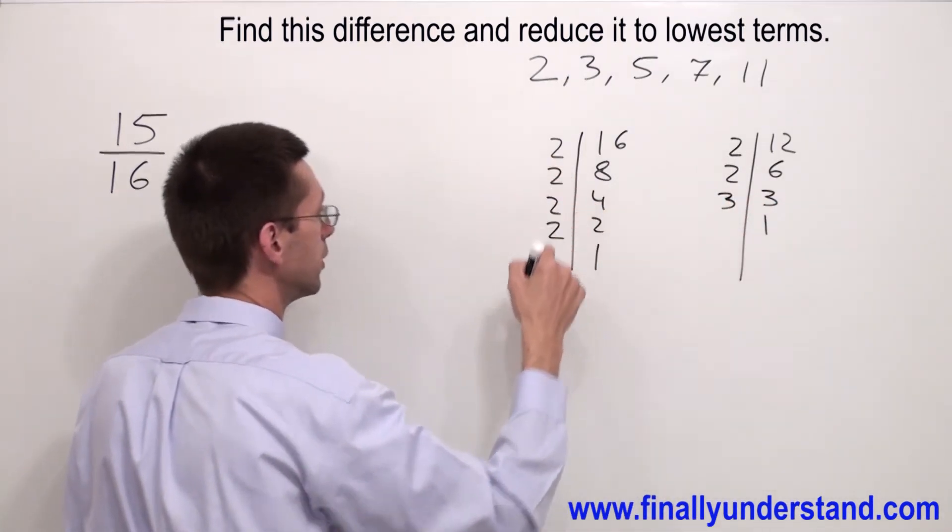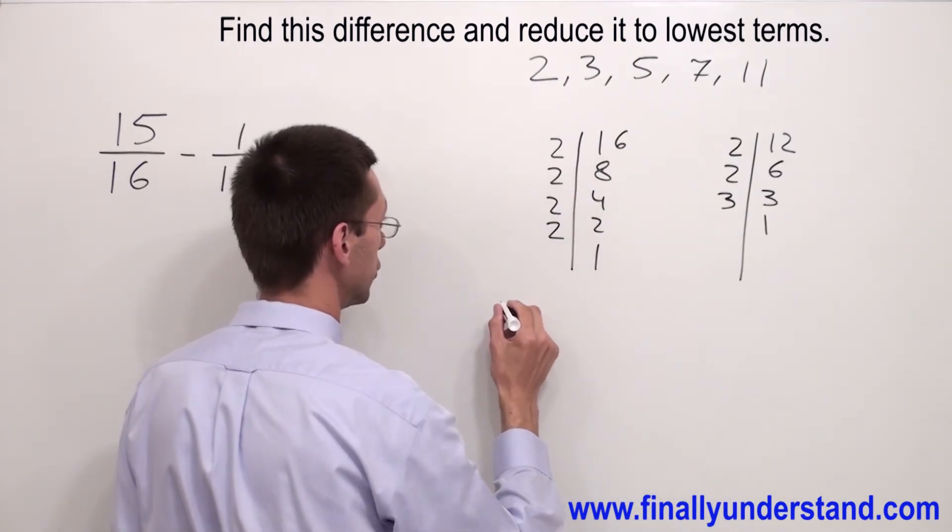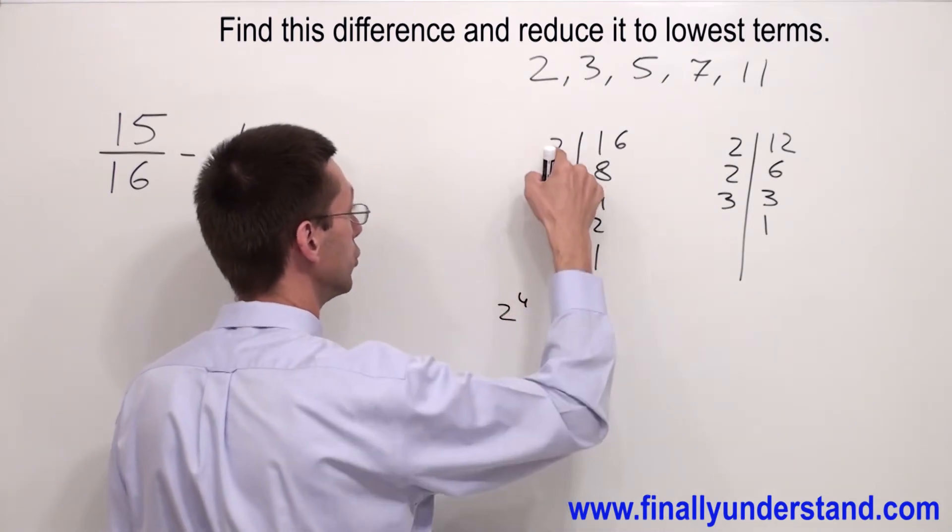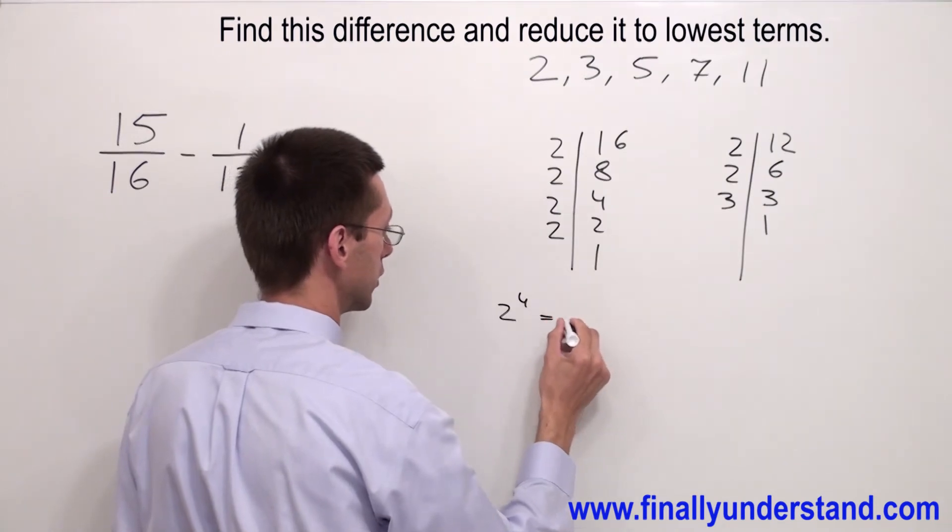You can rewrite this table like 2 to the 4th power because I have 2 times 2 times 2 times 2 equals 16.